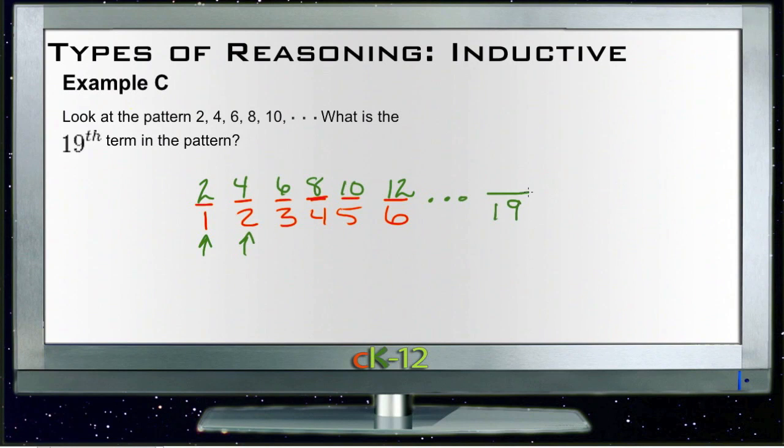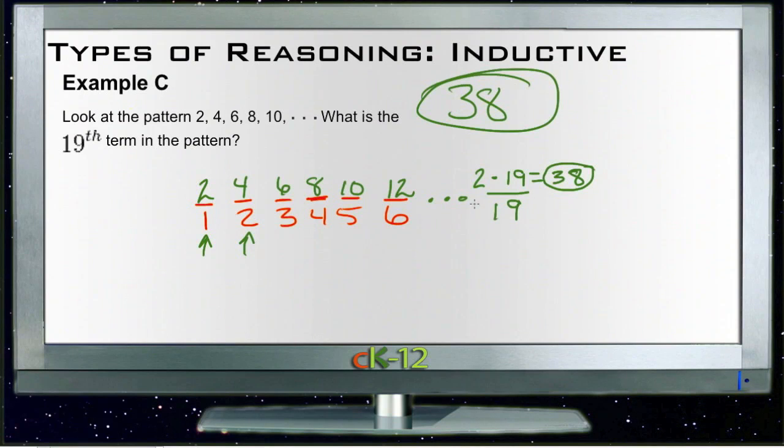That means position 19 would be 2 times 19, which would be 38. That was a lot easier than drawing it out. We just took our specific examples, used inductive reasoning to make a general statement - that for each position, the number above it was 2 times itself.